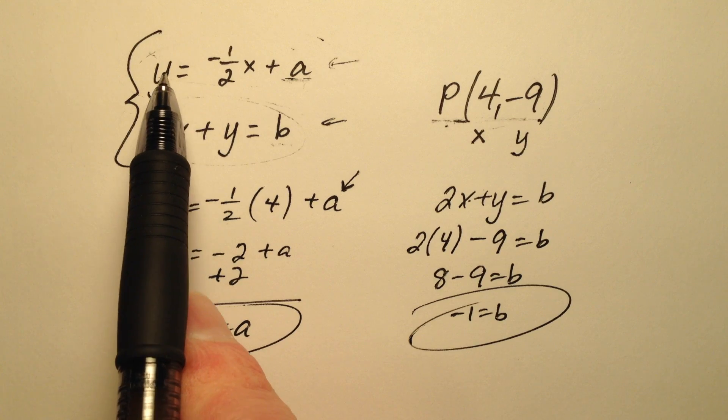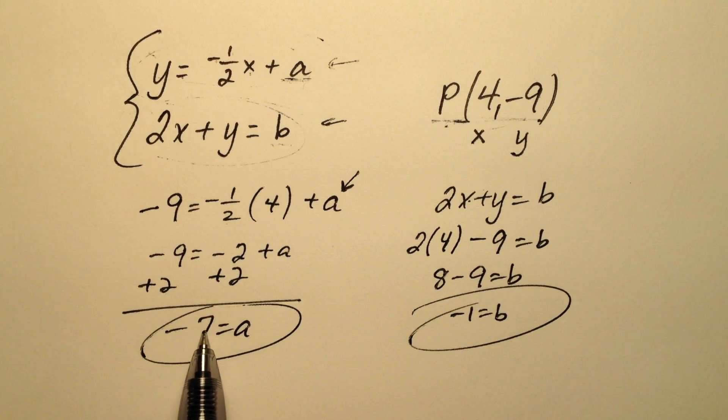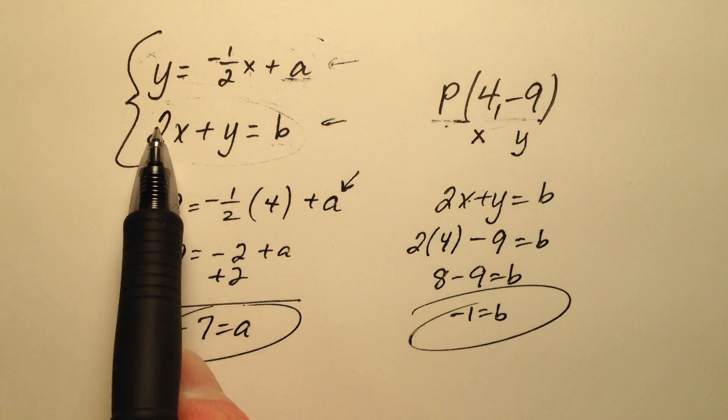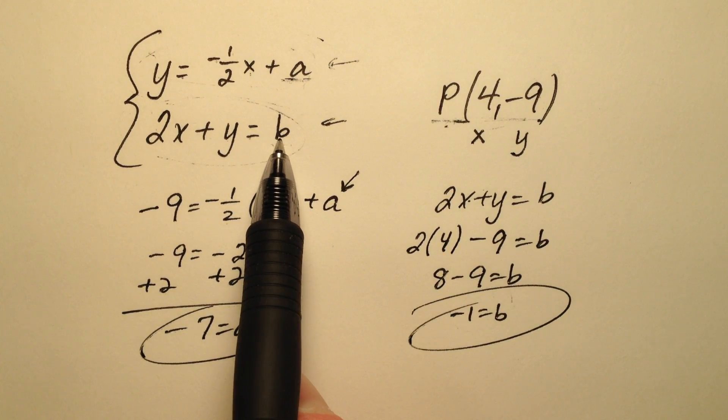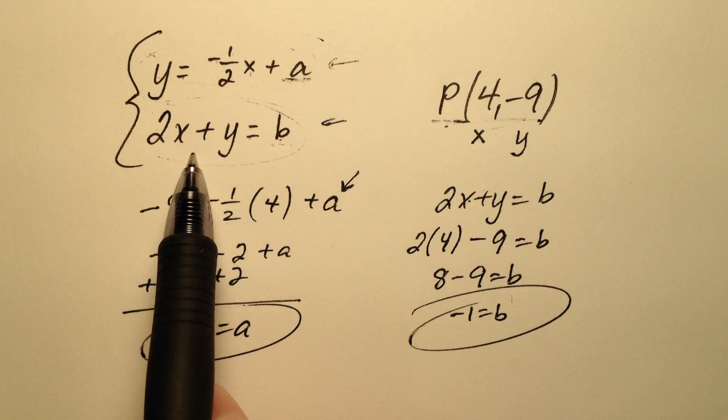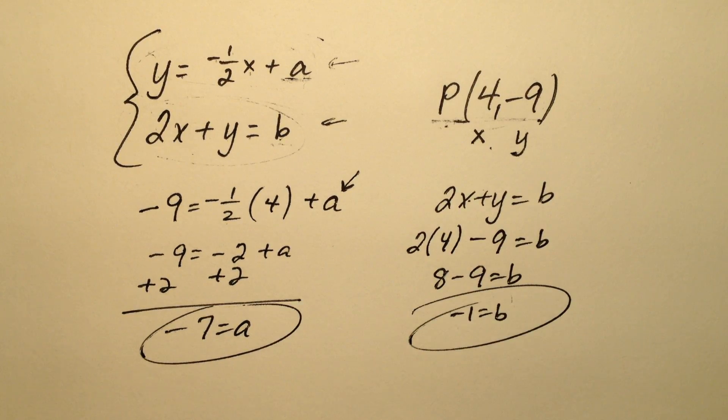So the first equation then becomes y equals negative 1 half x minus 7 because that's my value for a, and the second equation becomes 2x plus y equals negative 1 because that's my value for b. And if I was to graph these two I would find that they then intersect at this point (4, -9).